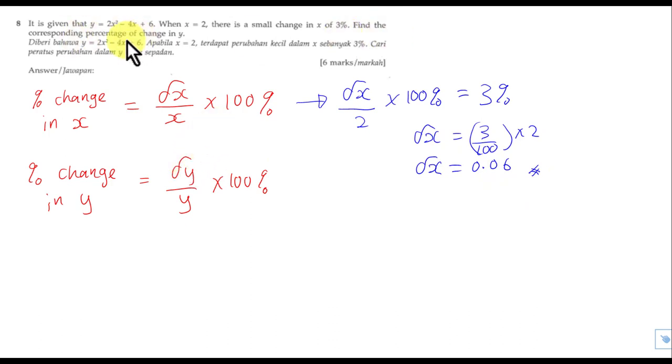Then find the corresponding percentage change in Y. In order to find change in Y, we have a small chain formula. I believe all of you know the small chain formula. The small chain formula is change of Y over change of X equals to dy/dx. Change of Y is what I want to find. Change of X, I got it already. It's 0.06.